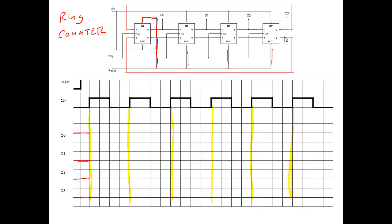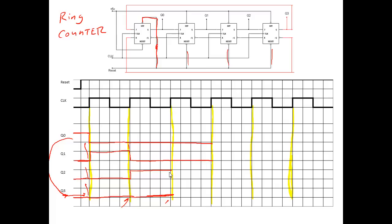For the first flip-flop, J is looking back at Q3. Q3 is low, so Q0 goes low. This flip-flop looks back and sees a high, so it goes high. This one looks back and sees a low, so it stays low. This one looks back and sees a low, so it stays low. On the next clock, Q0 looks back and sees a low, stays low. This one looks back and sees a low, goes low. This one looks back at a high, goes high. This one sees a low, stays low. Always look back right before the clock edge happened.